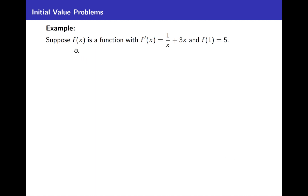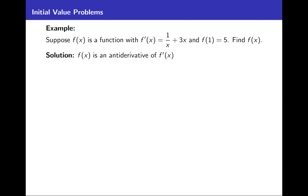Here's an example. Suppose f of x is a function with f prime of x equals 1 over x plus 3x. And in addition, f of 1 equals 5. From those two pieces of information — that its derivative is 1 over x plus 3x, and the fact that f of 1 equals 5 — what we want to do is find what f of x is. Since f of x has a derivative that we know, f of x is the antiderivative, so f of x is going to be the integral of 1 over x plus 3x dx.